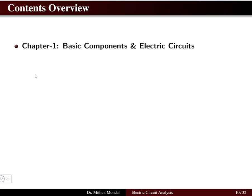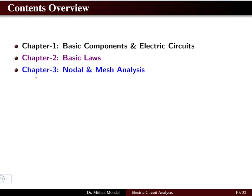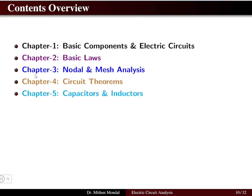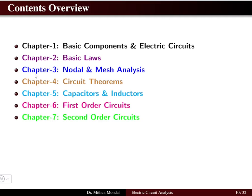The course contents include: Chapter 1 — basic components and electric circuits; Chapter 2 — basic laws; Chapter 3 — nodal and mesh analysis; Chapter 4 — circuit theorems; Chapter 5 — capacitors and inductors; Chapter 6 — first order circuits; Chapter 7 — second order circuits. Chapters 1 to 4 cover the DC part, Chapter 5 covers AC components, and Chapters 6 and 7 cover transients.